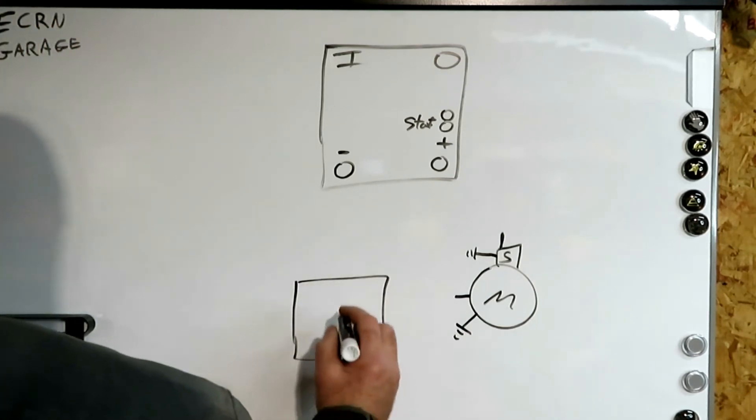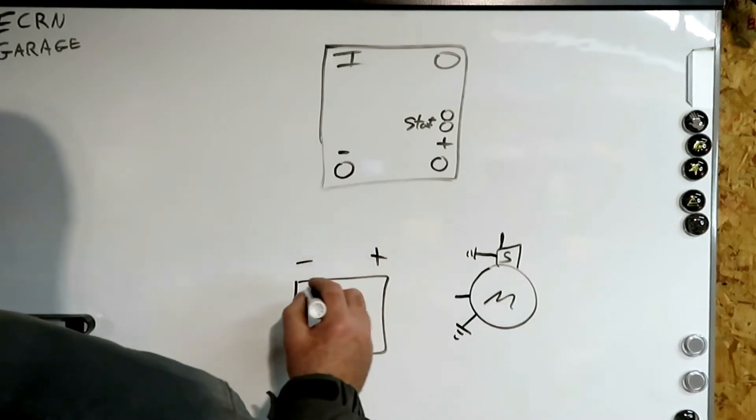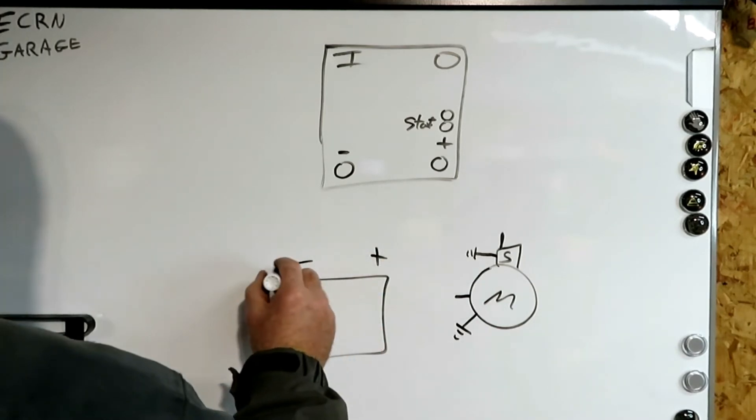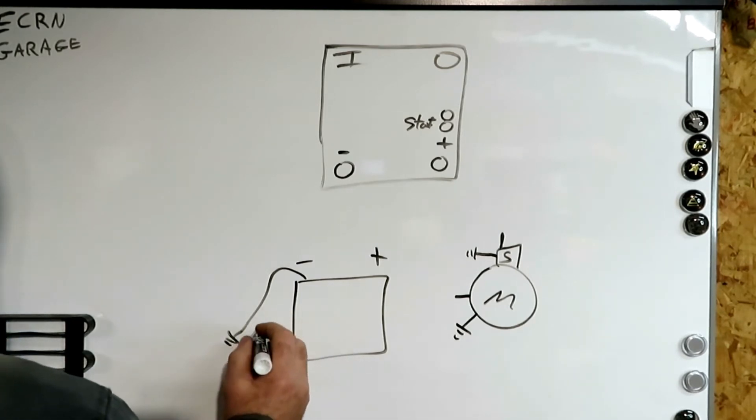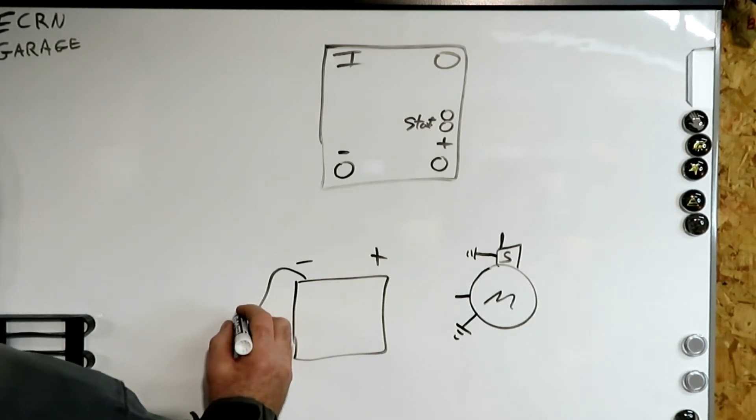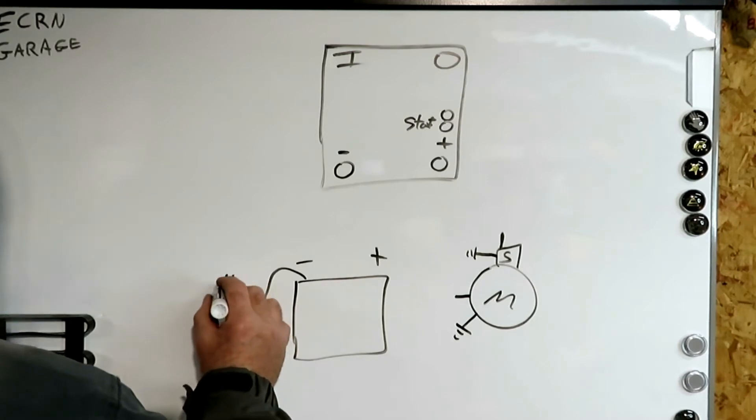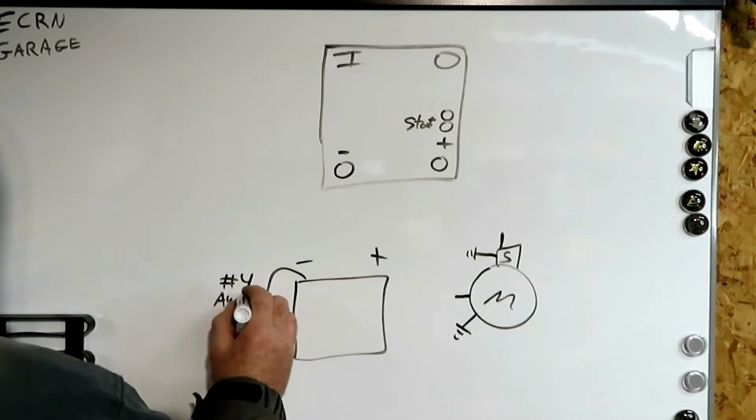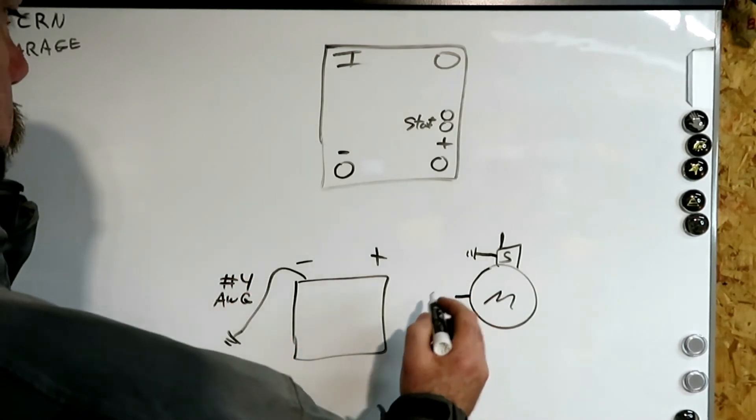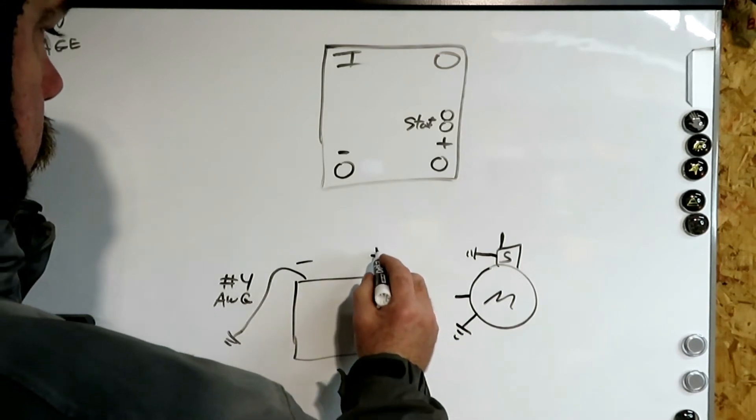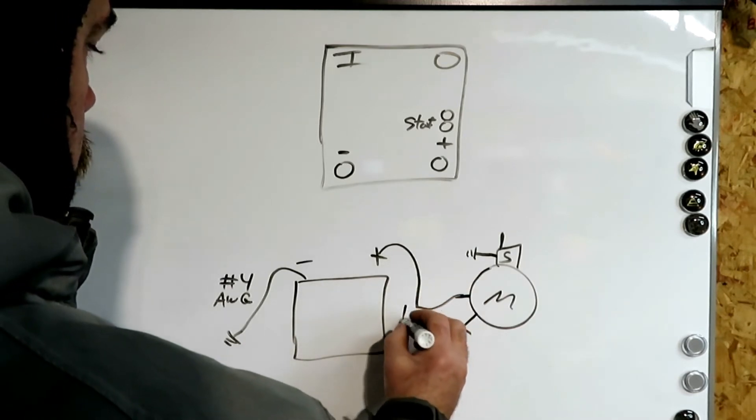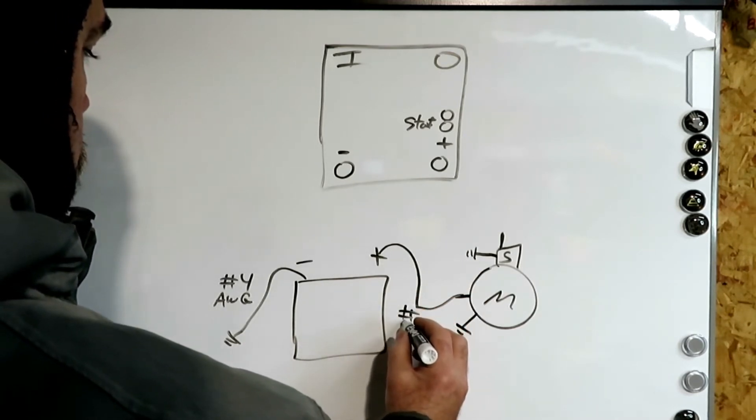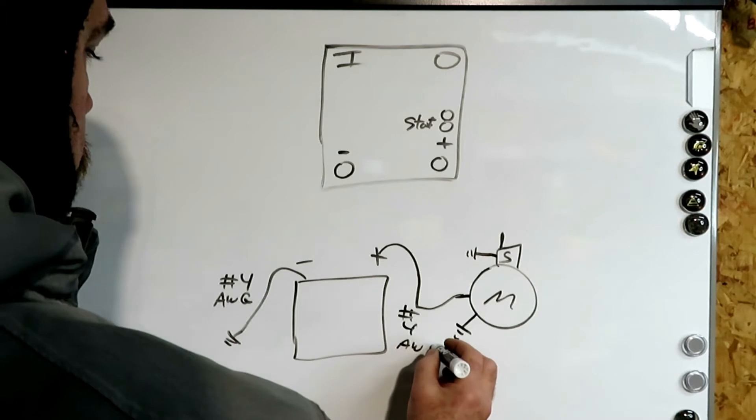And we'll draw our battery again, minus, plus. And our battery main battery cable, this is the big one, it's going to chassis ground. And it's going to be a number four AWG. And our starter, we have from the positive going to the motor, and it's also a number four AWG.